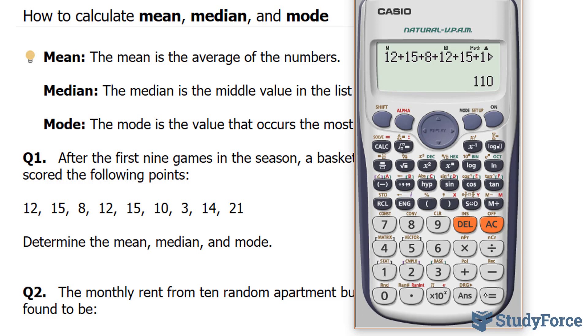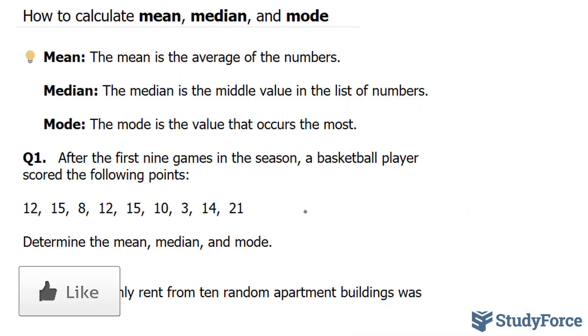We end up with 110. Divide this by 9, and we have the average of 12.2 points per game. So this right here represents the mean, the average.